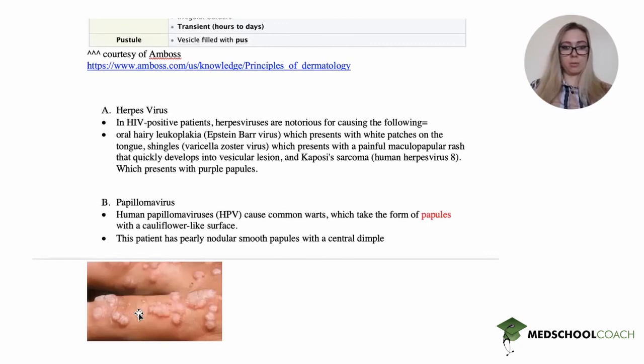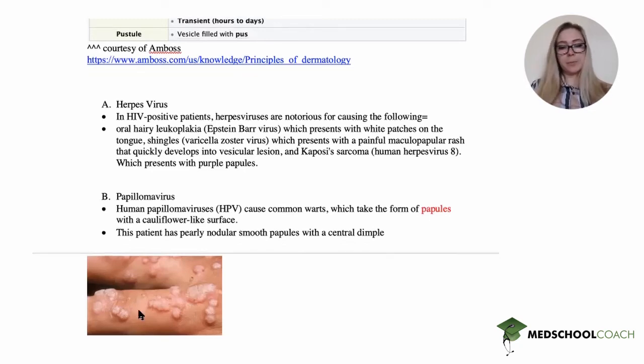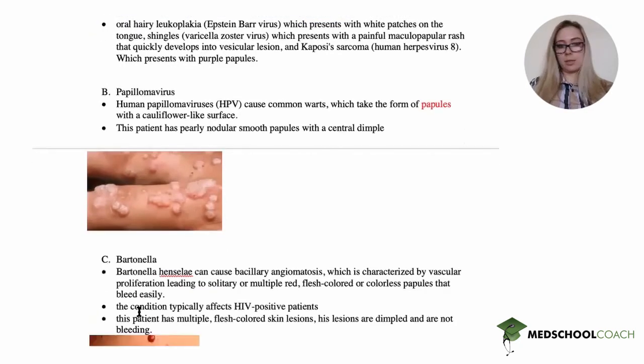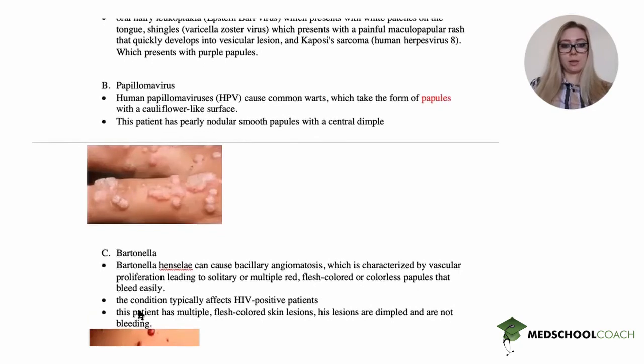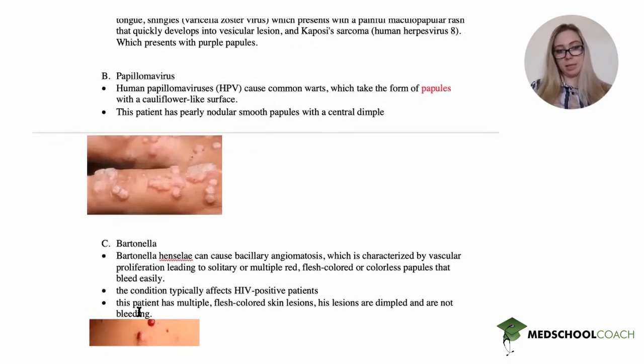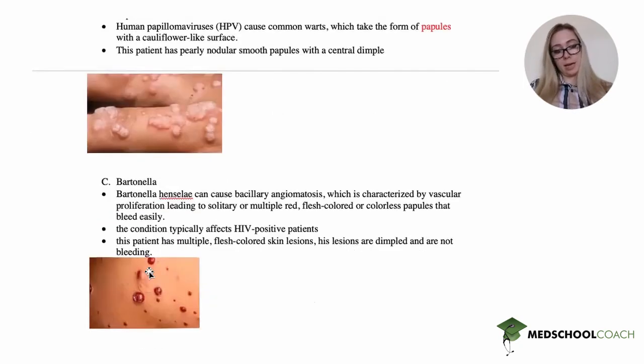Bartonella causes bacillary angiomatosis, which has vascular proliferation with solitary or multiple red, flesh-colored or colorless papules that bleed. That's the buzzword—they bleed, and it classically affects HIV-positive patients. That's not what he has. This is kind of what that would look like—a very red, angry, bleeding lesion.